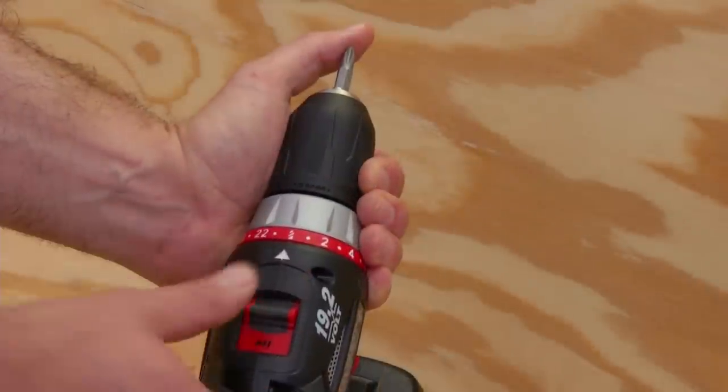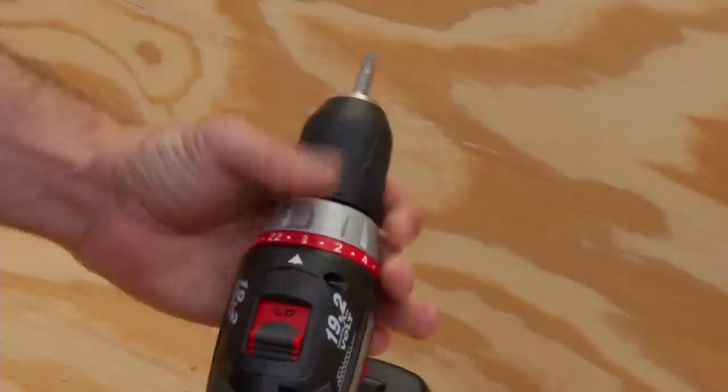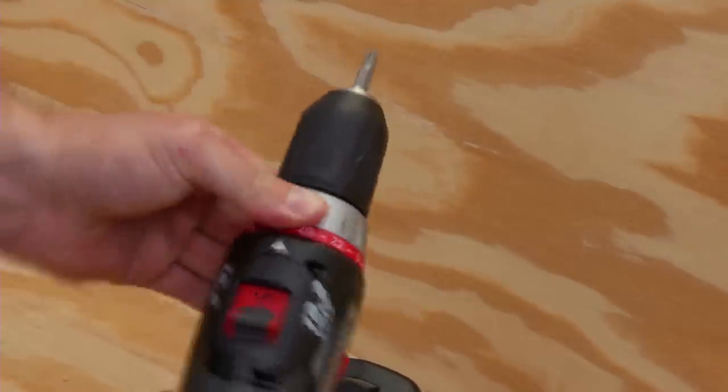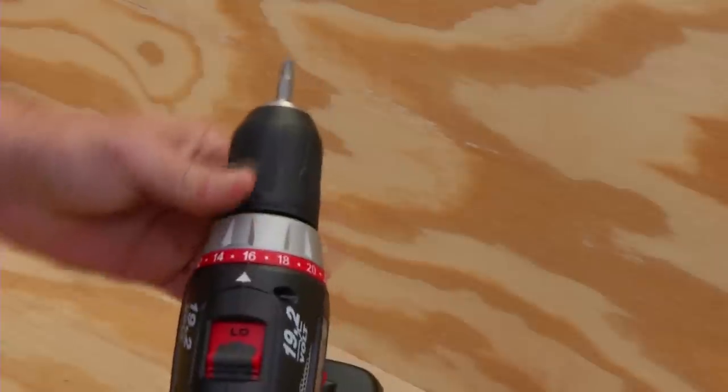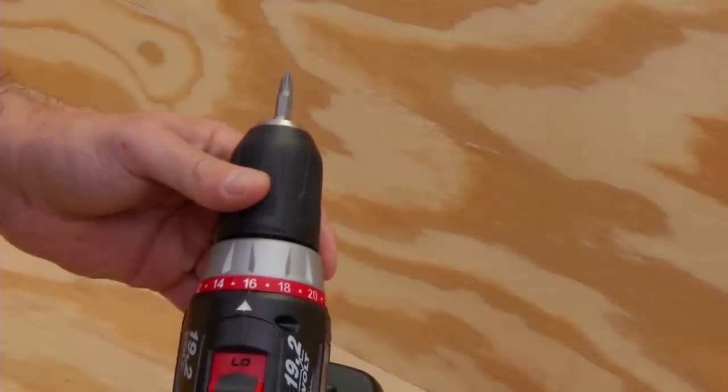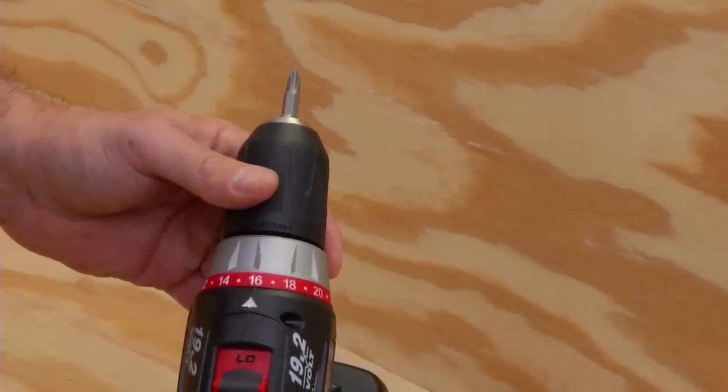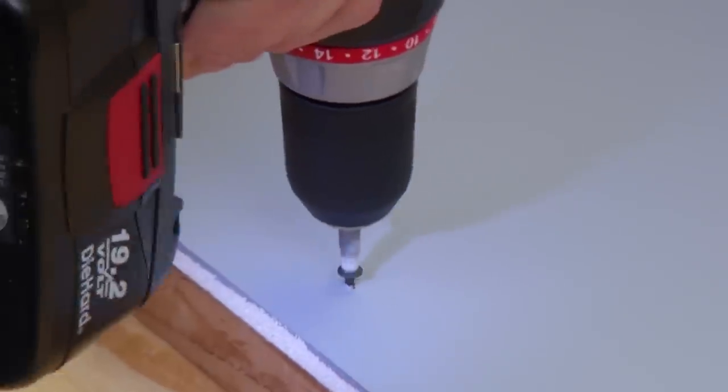To drive screws, switch to low speed and use one of the numbered settings on the clutch to control the power behind the twist. At these settings, the driving action stops when you hit a certain amount of resistance. This prevents stripped screws or lets you drill and drive repeatedly to the same depth.